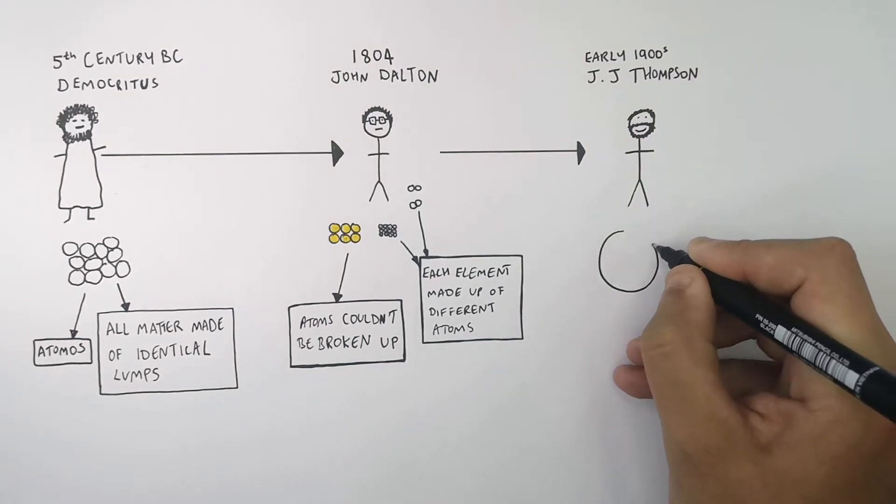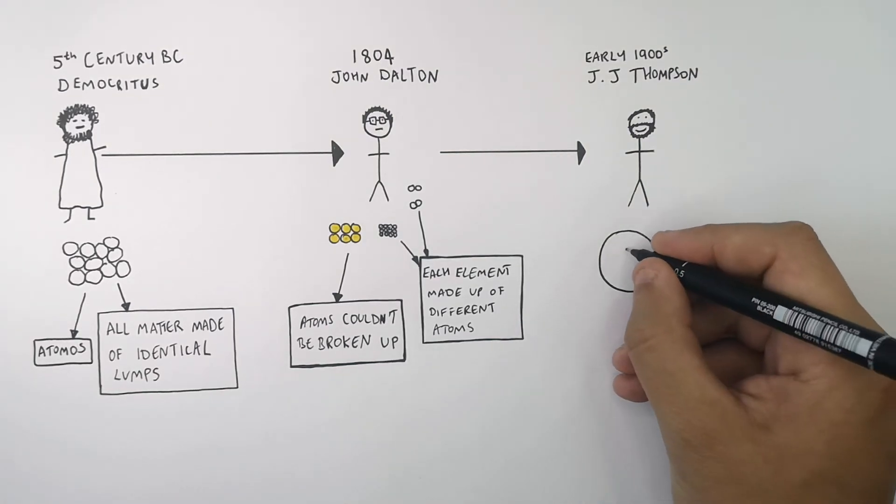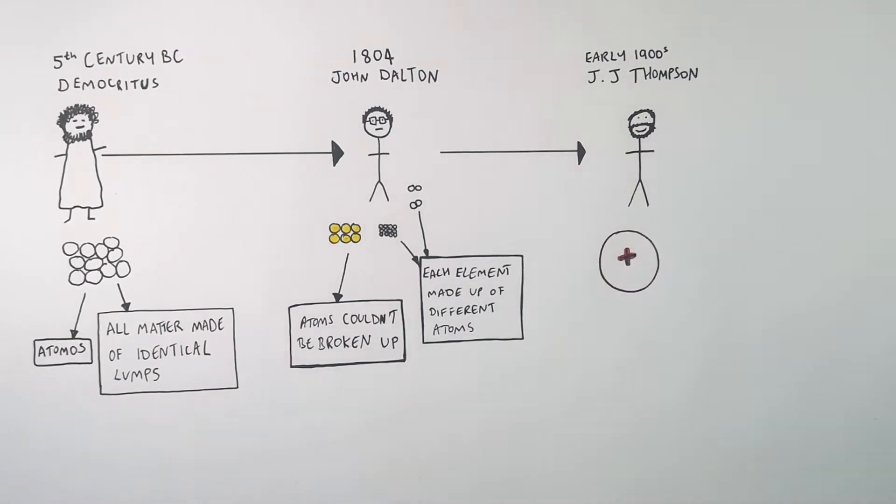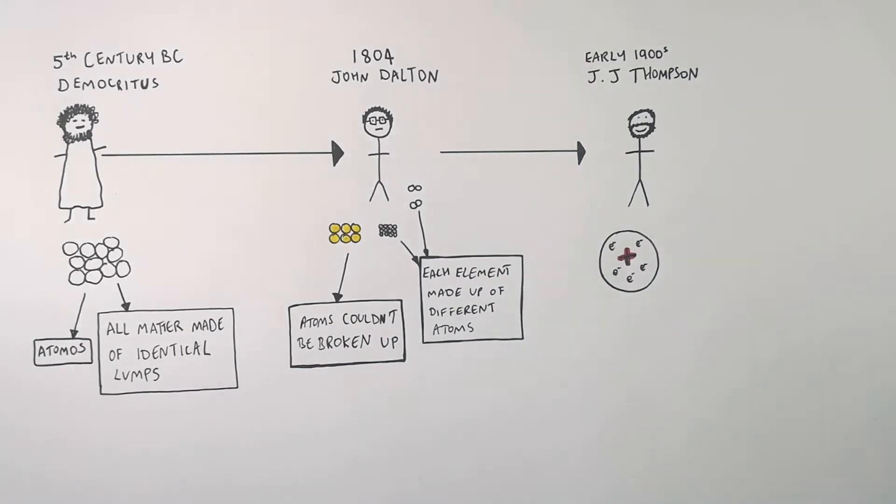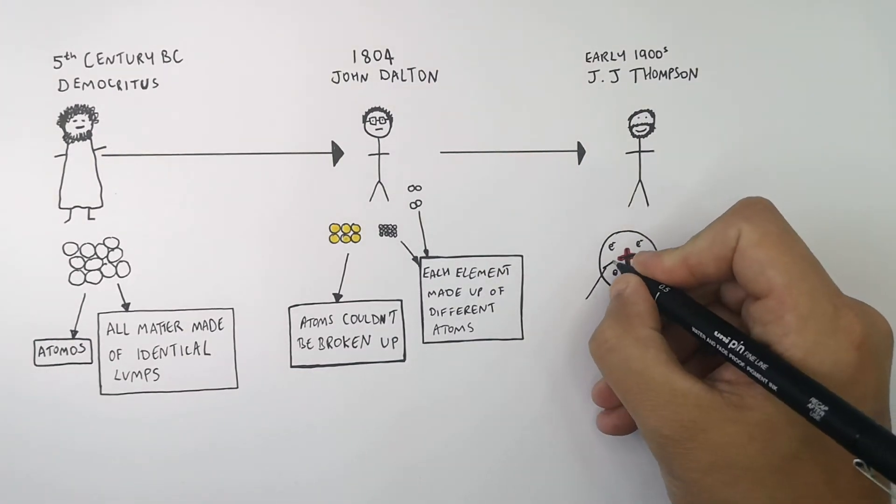So the plum pudding model suggested that there was a sphere of positive charge, and that within the sphere of positive charge were negative electrons. That has now been shown to be completely wrong.